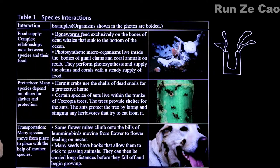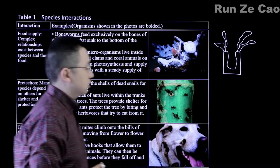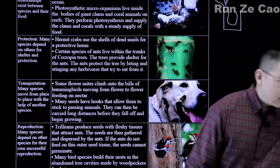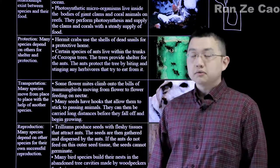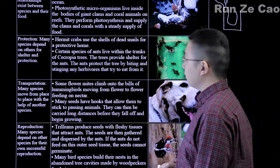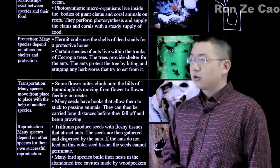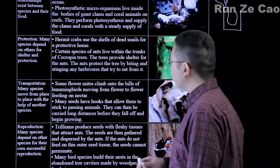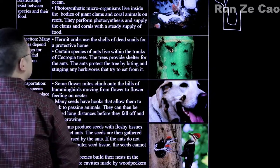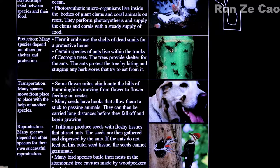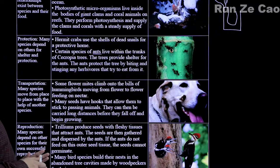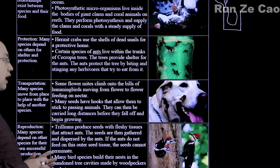Other interactions between species may be protection. Many species depend on others for shelter and protection. We have hermit crabs, which use shells of dead snails — or nowadays even plastic bottle caps — for protective homes. We also have ants that live within the trunks of cecropia trees or acacia trees, depending on the case. These trees provide shelter for the ants.